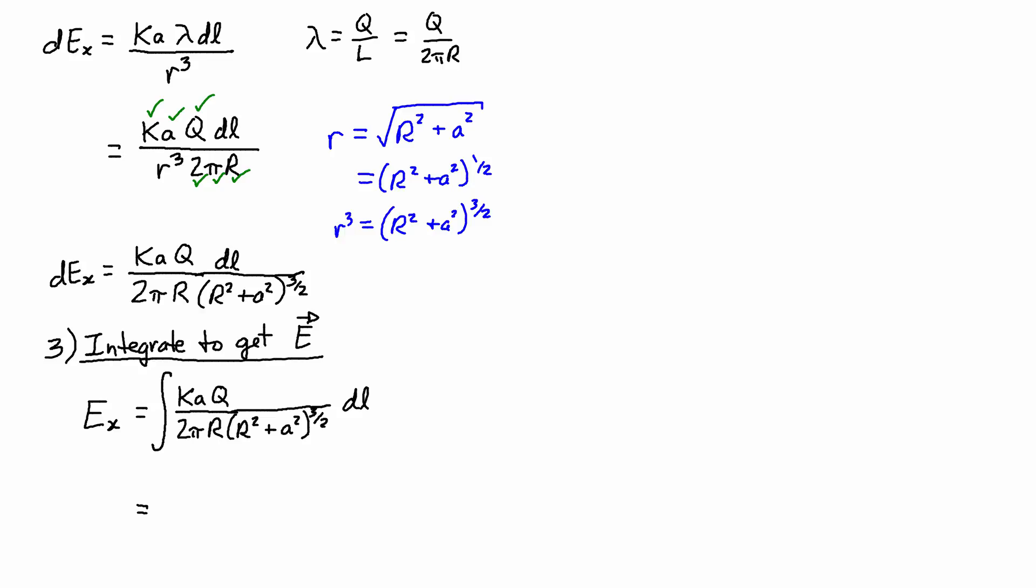So I substitute in. Now, again, almost all of these things are constants. k, a, Q, 2 pi, R, and a, they're all constants. So I can take those out of the integral. And then I have all of those constants, and then I'm just integrating dl.